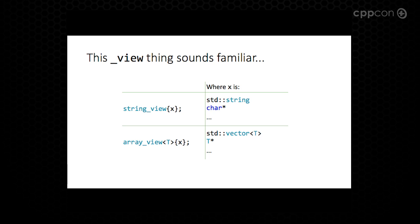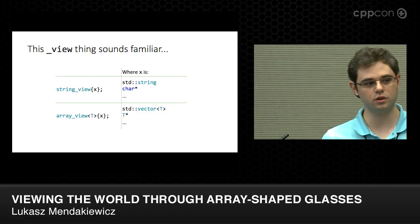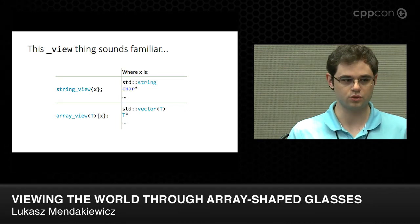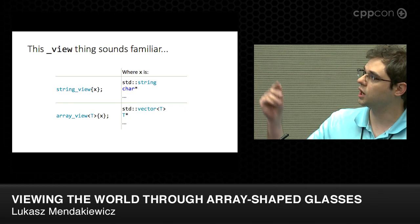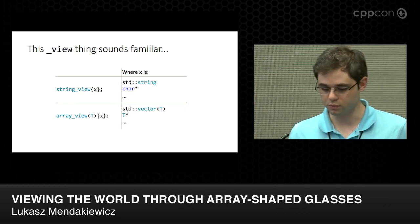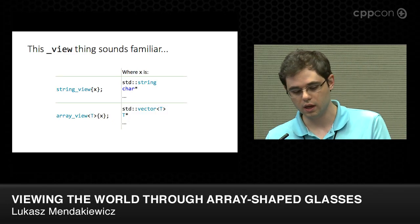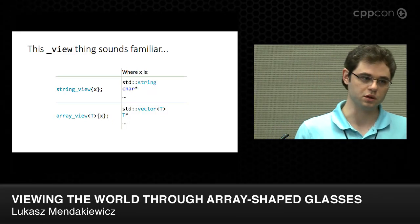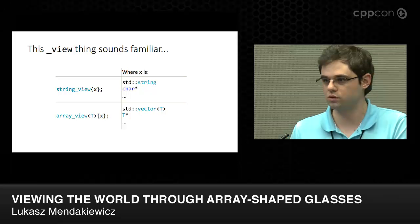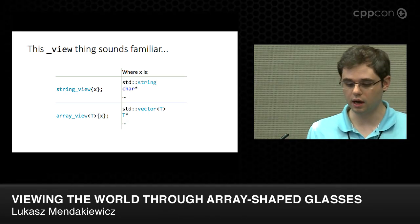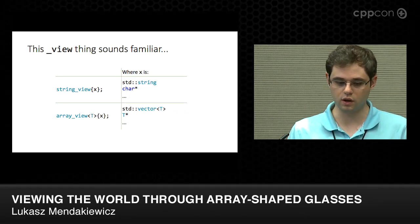This whole view concept might sound familiar, because there was one other proposal that went through standardization recently: string_view. It is really the same concept, although string_view is geared towards string data — it accepts std::string and char*, so string literals. In return it gives functions specific to strings, like finding a substring. While array_view is a more generic approach for any contiguous data.